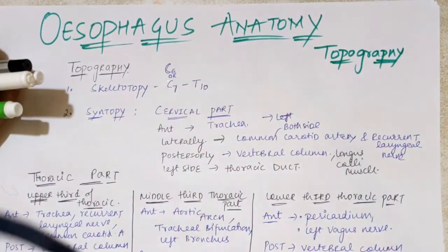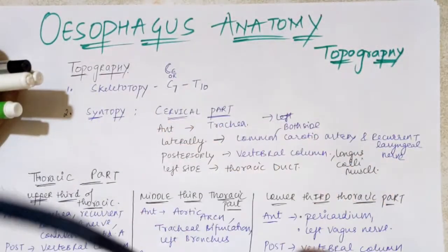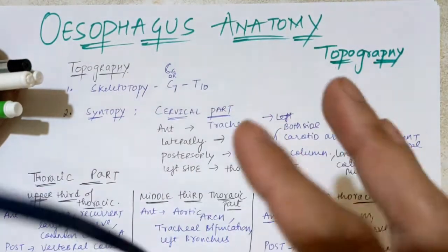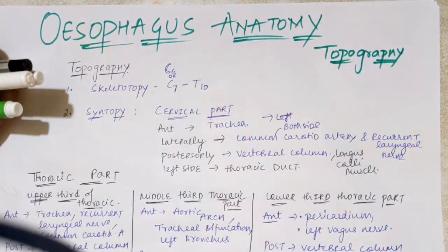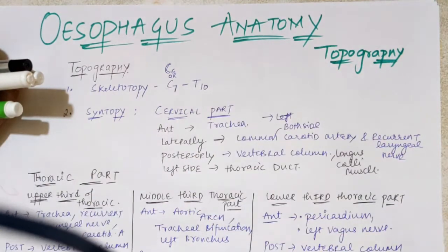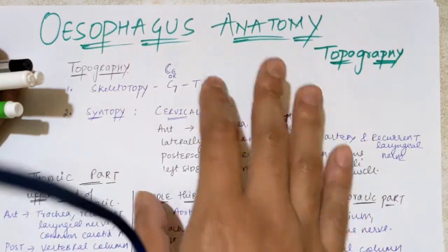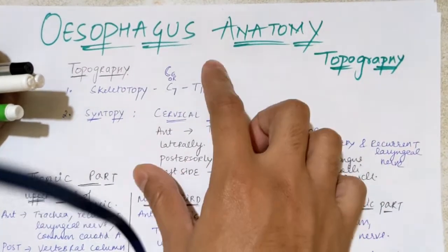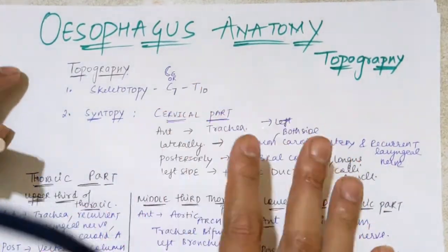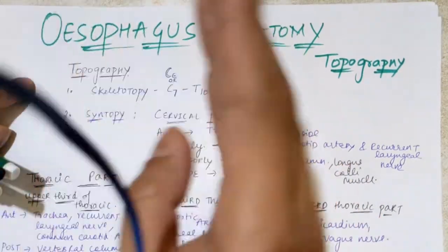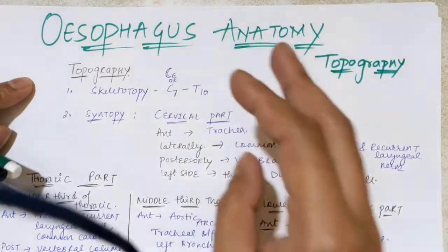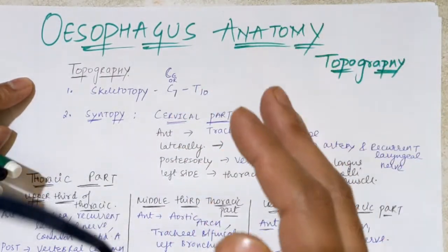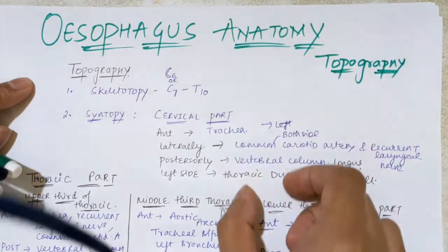The relation with respect to different organs is called syntopy. We will be discussing what is present anterior, lateral, posterior, left side, and right side of the esophagus. This video will specifically discuss topography, and the next video will cover the anatomy of the esophagus — its parts, constrictions, curvatures, and levels.